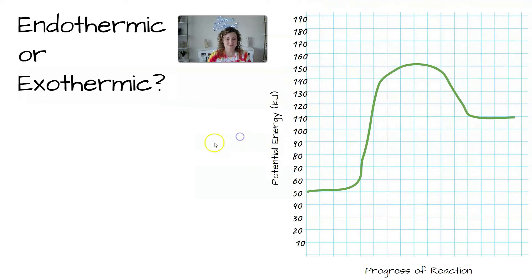Let's try another one. All right, is this one endo or exothermic? You probably guessed it. This one's endothermic. And that is because our reactants have a lower potential energy than our products do.